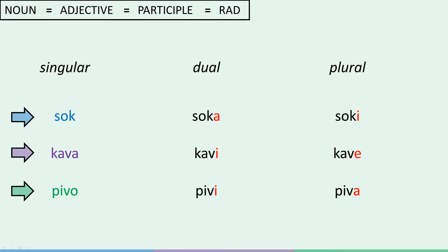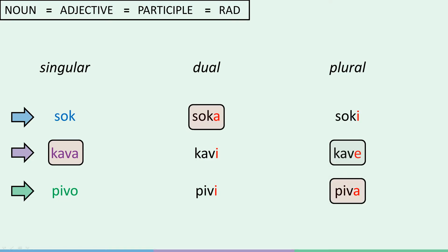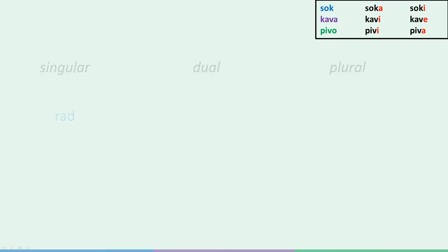For example, it's important to understand that if we're dealing with three feminine things, the ending is -e, and so on and so forth. However, keep in mind that the same ending can represent different things: the ending -a can represent one of something feminine, two of something masculine, and three of something neuter. Anyway, let's put this table in the top right corner and see how this all relates to rad. If we know rad is identical to sok, getting all the other endings is very simple, as long as we have the table in the top right in mind.